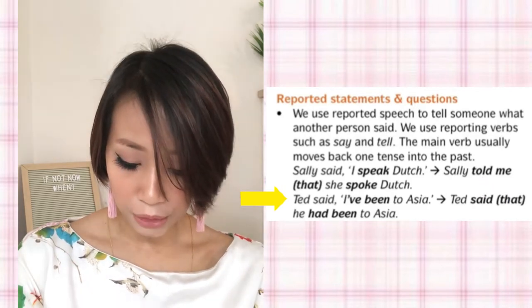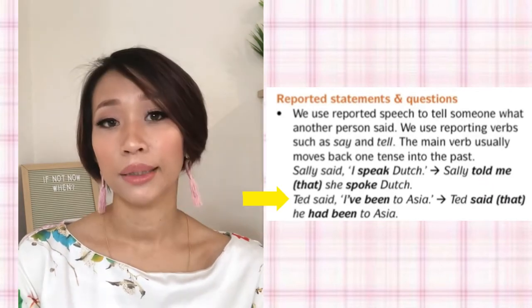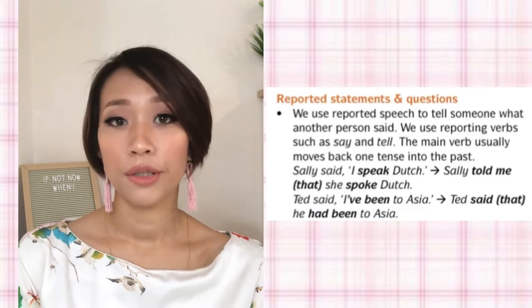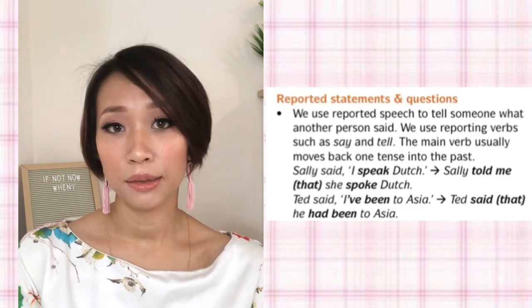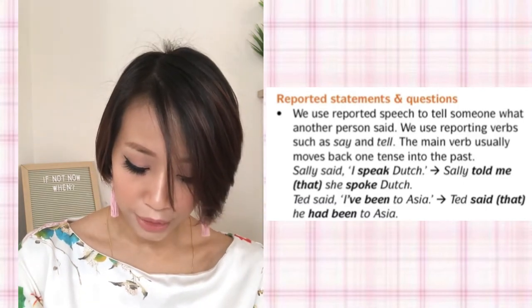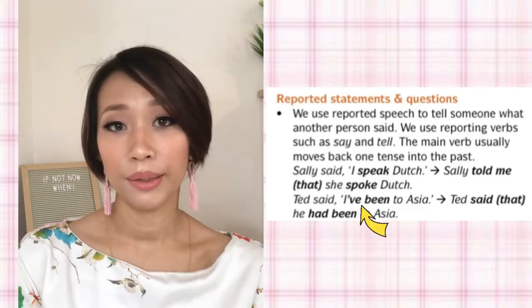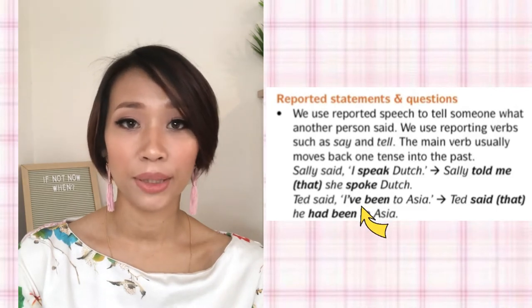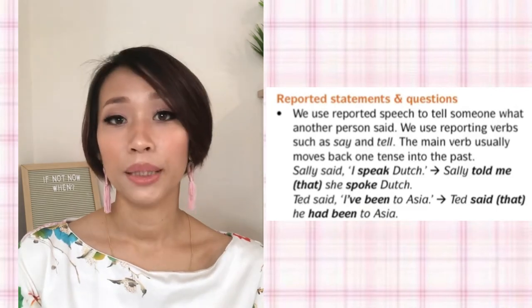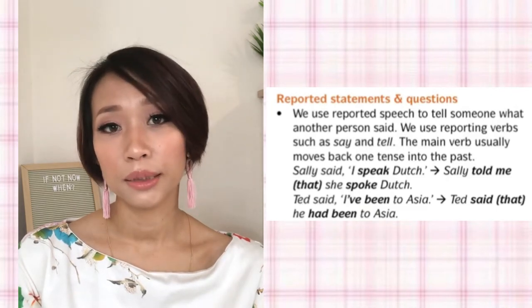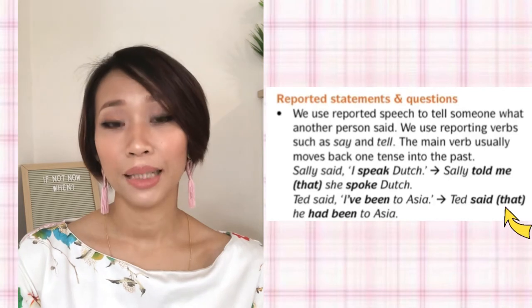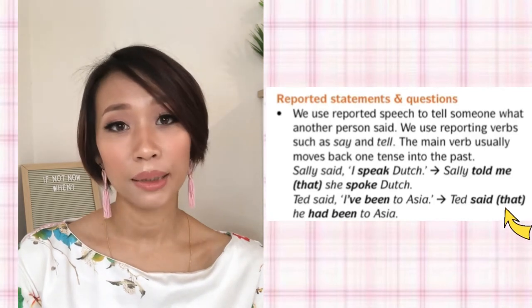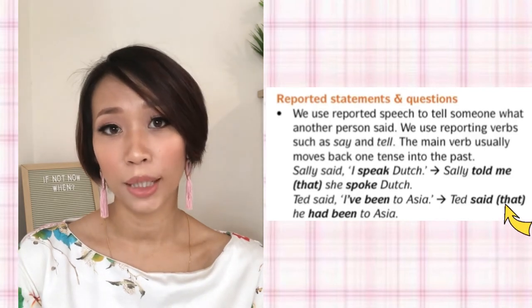Ted said 'I've been to Asia.' Ted kata saya pernah pergi ke Asia. The reported speech is: Ted said that he had been to Asia. Have been ialah main verb dalam present perfect tense, tetapi dalam reported speech jadi past perfect tense. That dalam konteks ini maksudnya boleh pakai, tidak payah pakai pun boleh.